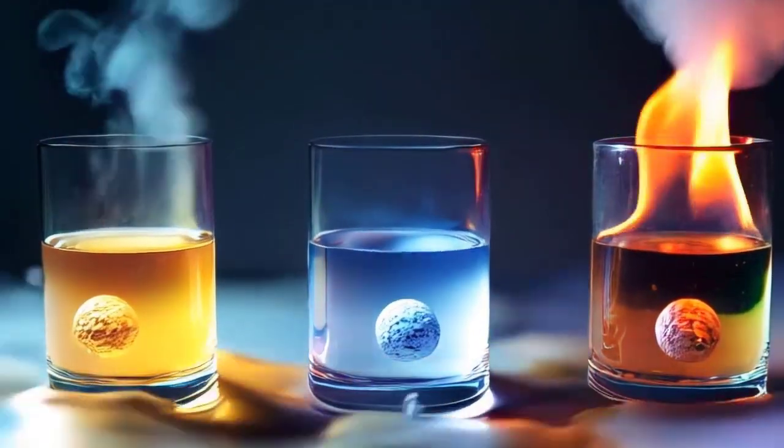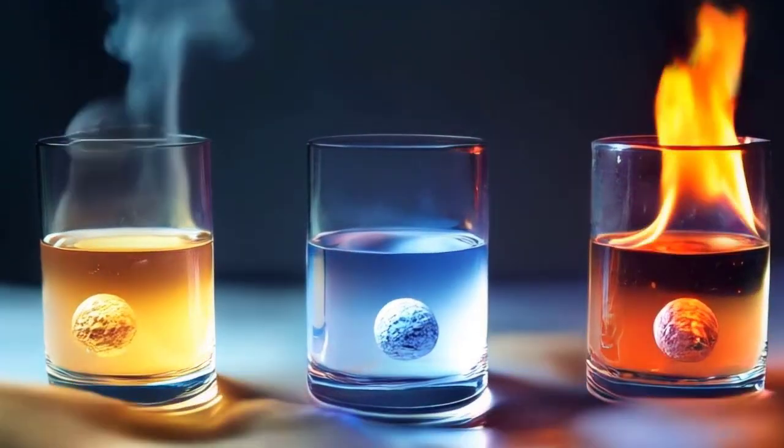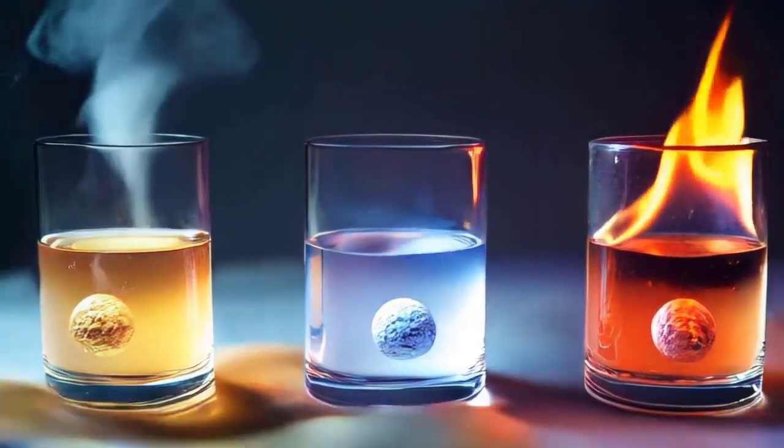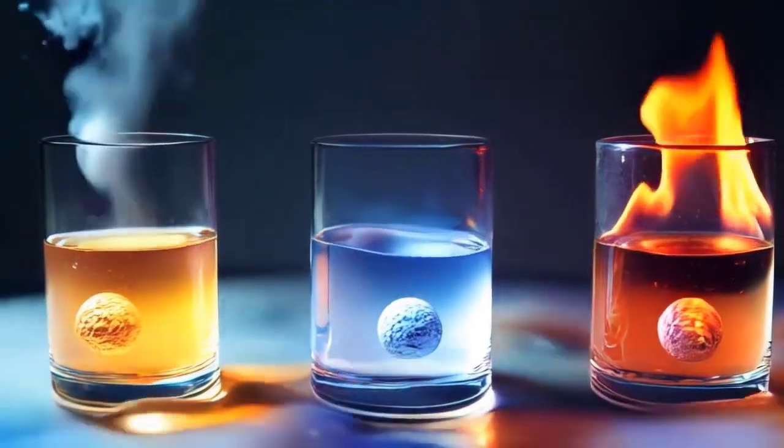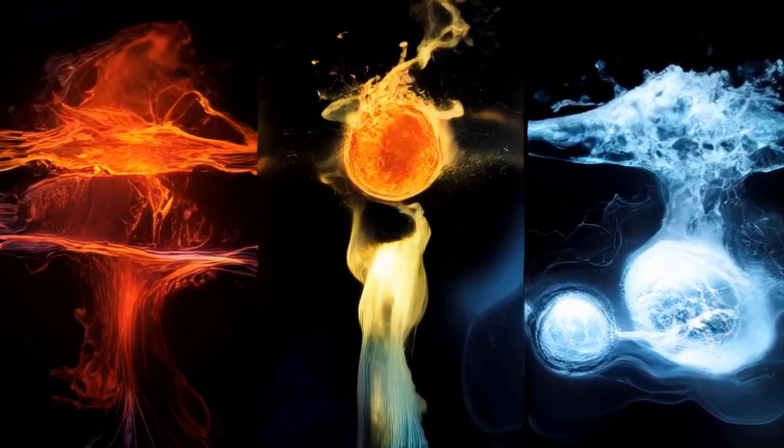Picture the sun, a ball of plasma, where atoms are ripped apart into charged particles, or a Bose-Einstein condensate, where atoms merge into a single quantum superparticle at near absolute zero.